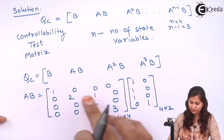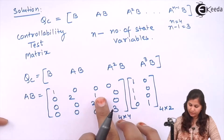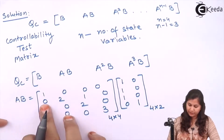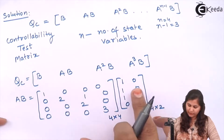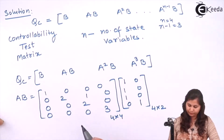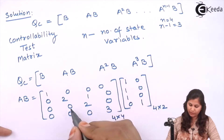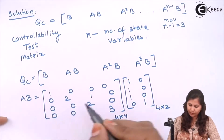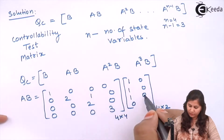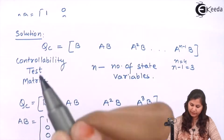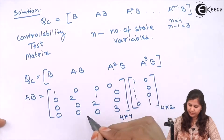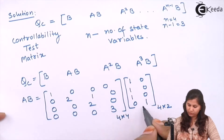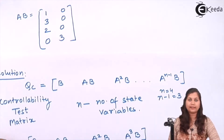For the second row first column: 0×1 plus 2×1 plus 1 gives 3. Second row second column gives 0. Third row first column: 0×1, 0×1, 2×1 gives 2. Third row second column gives 0. Last row first column is 0, and last row second column: 0, 0, 0, 0 and 3 gives 3. So the AB matrix is computed.